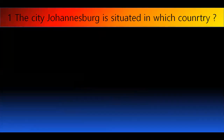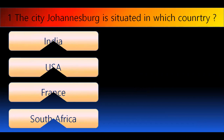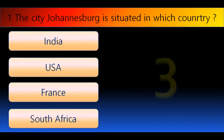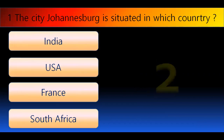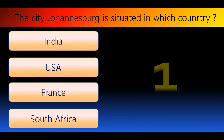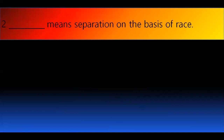Our first question is: the city Johannesburg is situated in which country? The options are India, USA, France, or South Africa. You have to give this answer in three seconds. The right answer is South Africa.